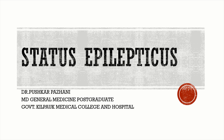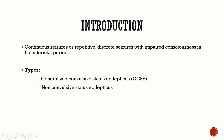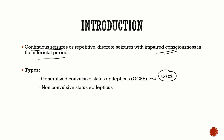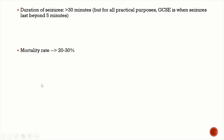Today we're going to be talking about an important neurological emergency — status epilepticus. A simple understanding of status epilepticus is when the patient has continuous seizures without regaining consciousness in the interictal period. The most common type we encounter is due to continuous generalized tonic-clonic seizures, known as generalized convulsive status epilepticus. You can also have non-convulsive status epilepticus.